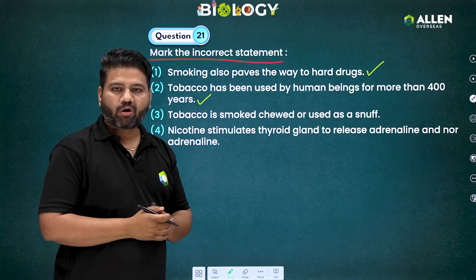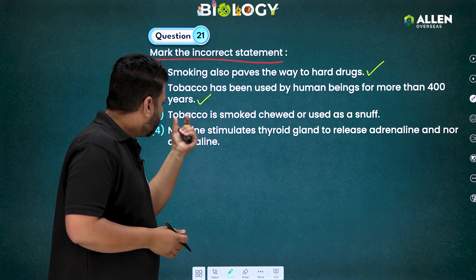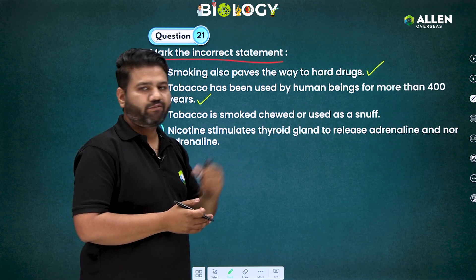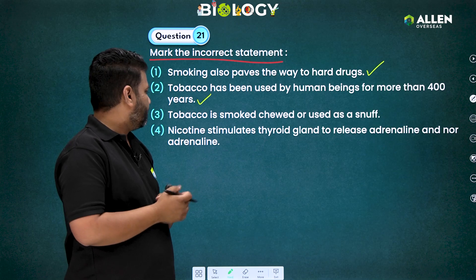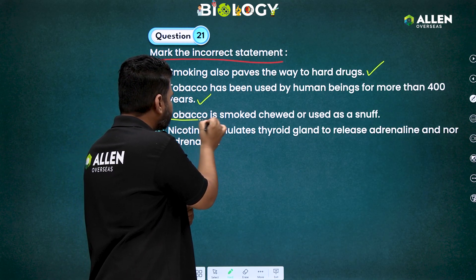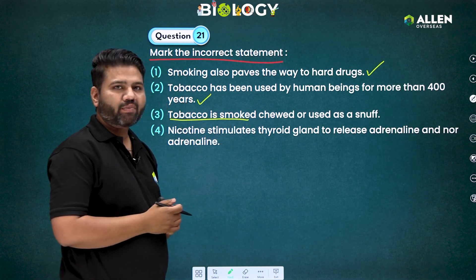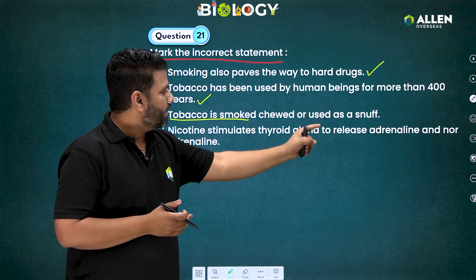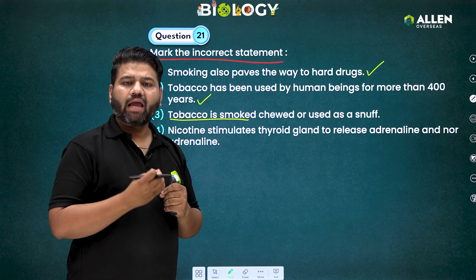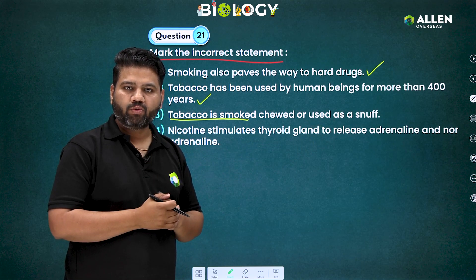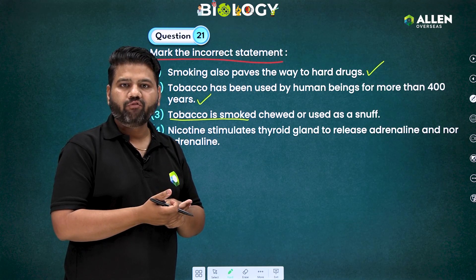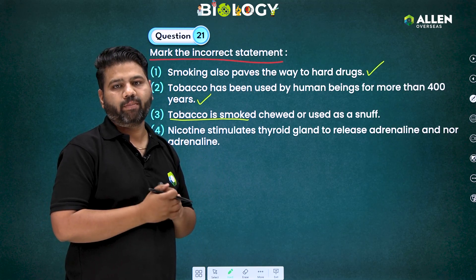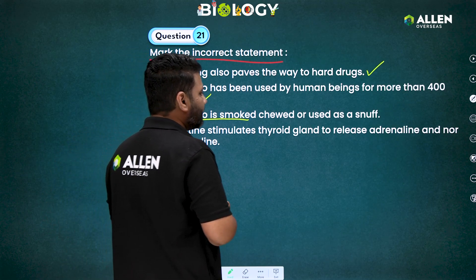The third statement says tobacco is smoked, chewed, or used as a snuff. Tobacco is smoked in the form of cigarettes, chewed in the form of gutka or paan masala, and snuffed by taking tobacco, crushing it into a powder, and then inhaling it. This is known as snuff of tobacco. So this statement is again correct.